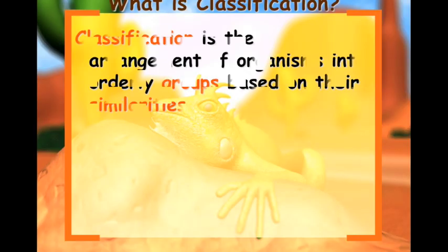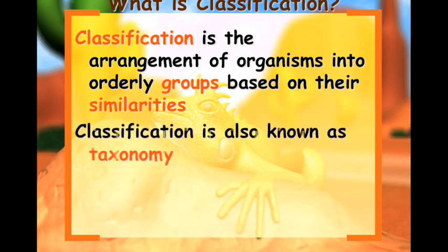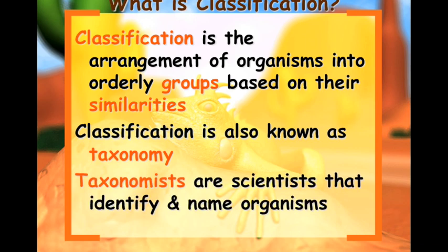So what is classification? Classification is the arrangement of organisms into orderly groups based on their similarities. Classification is also known as taxonomy. Taxonomists are scientists that identify and name organisms.